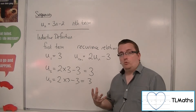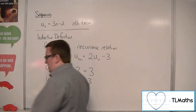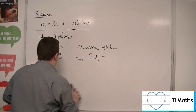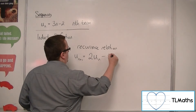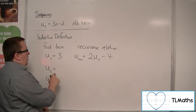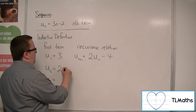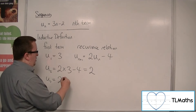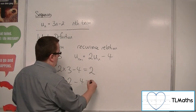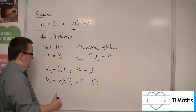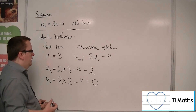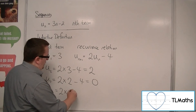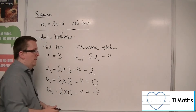That's not true of all recurrence relations or inductive definitions. I could change this very slightly — to subtracting 4 instead. Then the second term is two lots of the previous term take away 4, which is 2. The third term is two lots of the previous term take away 4, which is 0. The next one is two lots of 0 take away 4, so minus 4. The sequence is going 3, 2, 0, minus 4.